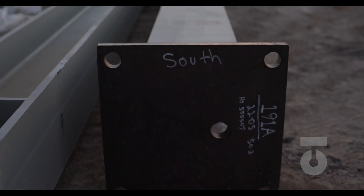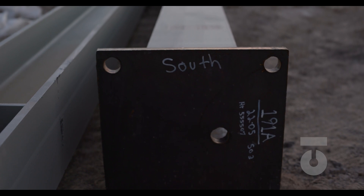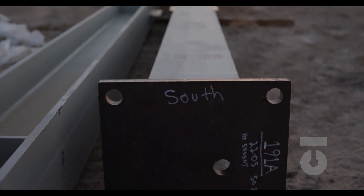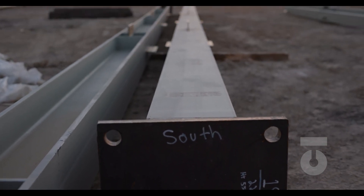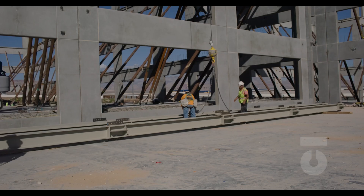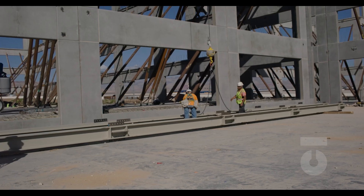With an organized load list that is properly sequenced according to our erection schedule, we have steel brought in correctly. In the case of our office building, we would start with the columns that need to be loaded in, rigged, then installed.